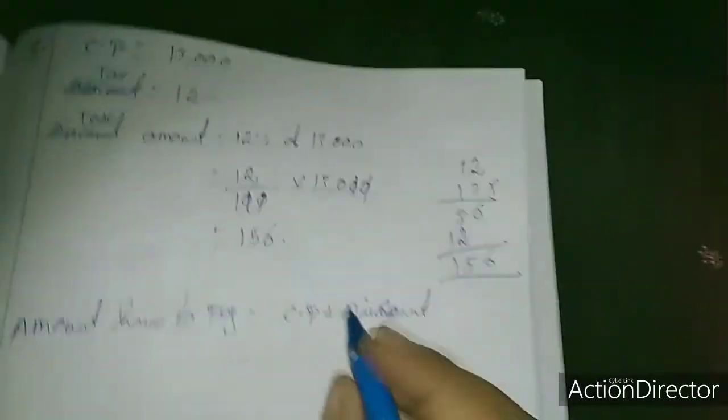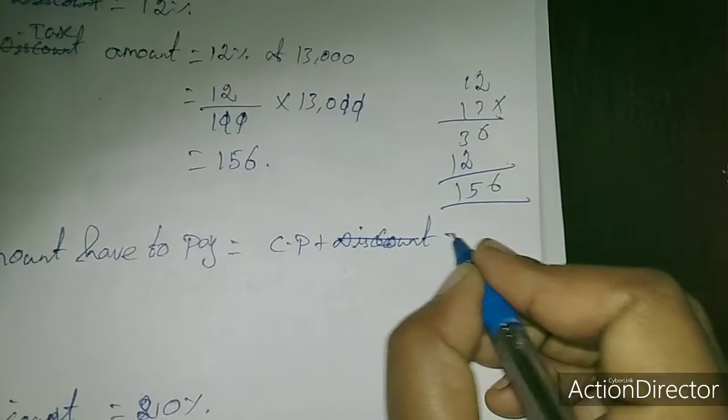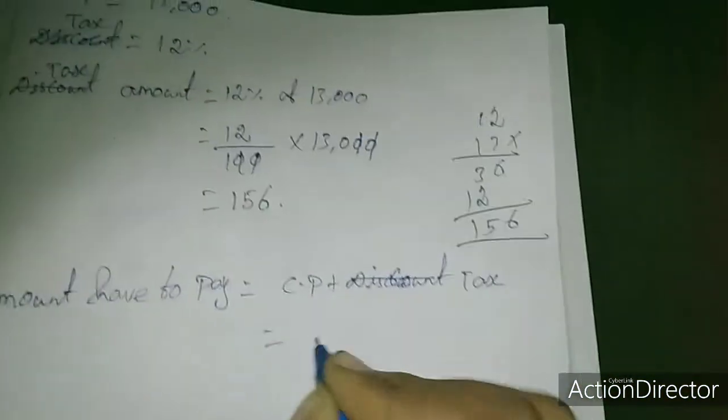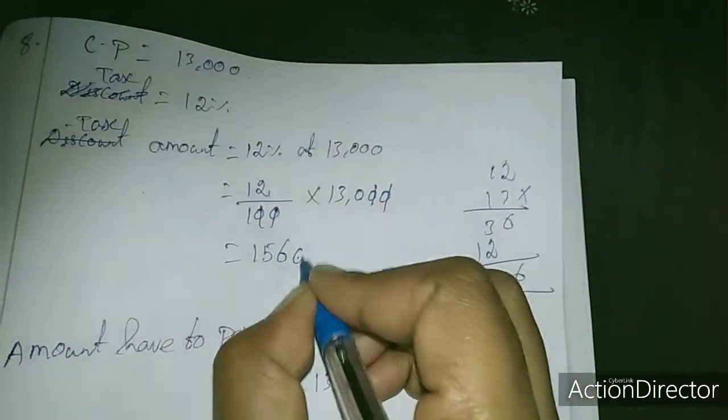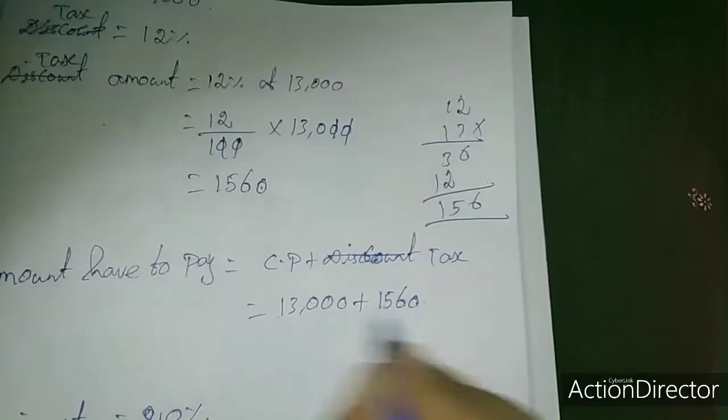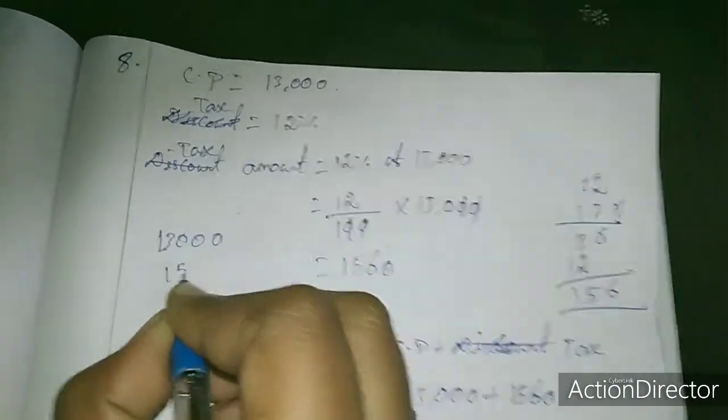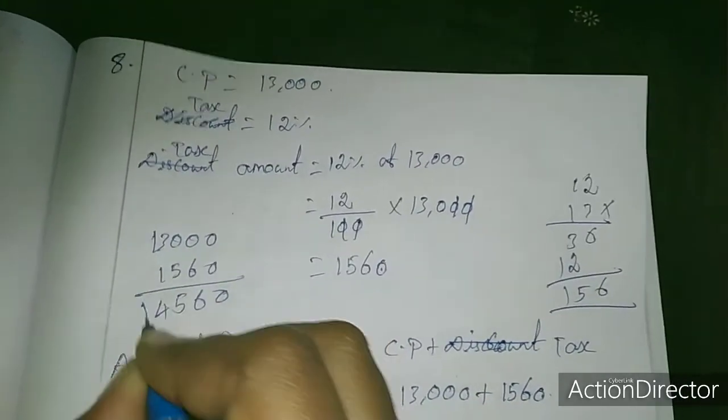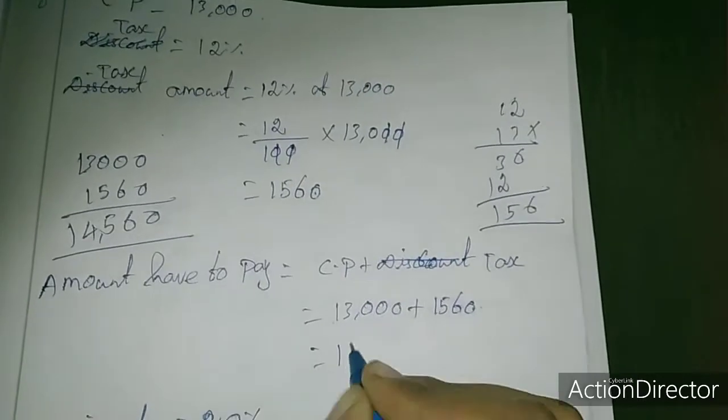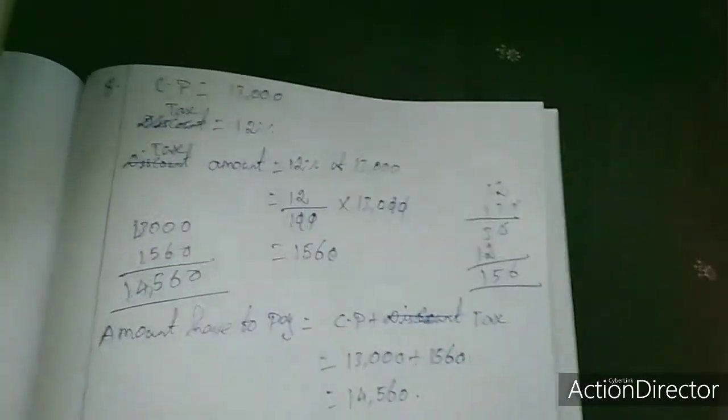Now we will find the total amount to pay, which is cost price plus tax. Cost price is 13,000 plus 1,560. Sorry, I missed a zero, so this is 13,000 plus 1,560 equals 14,560. This is the answer for problem 8.